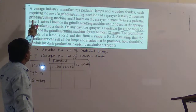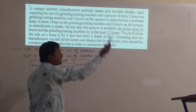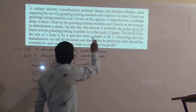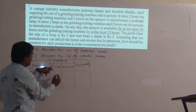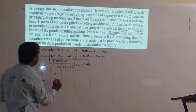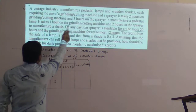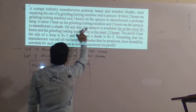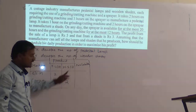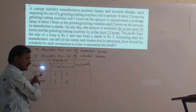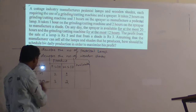To manufacture a pedestal lamp, it takes two hours on the grinding or cutting machine and three hours on the sprayer. Similarly, to manufacture a wooden shade, it takes one hour on the grinding or cutting machine and two hours on the sprayer.